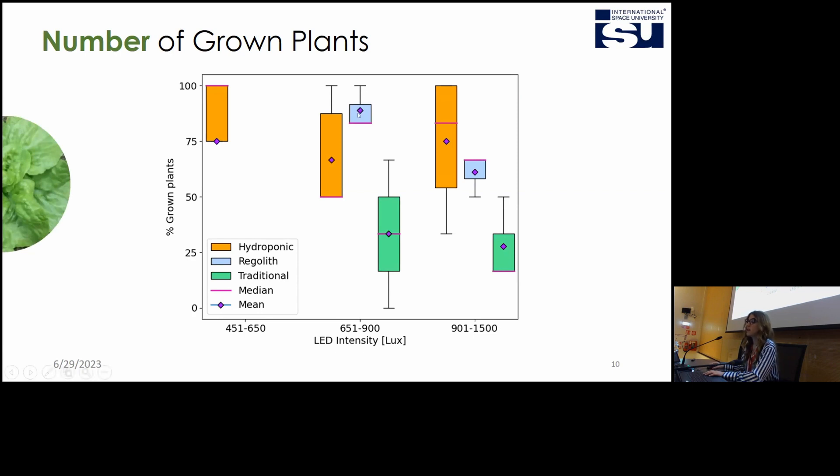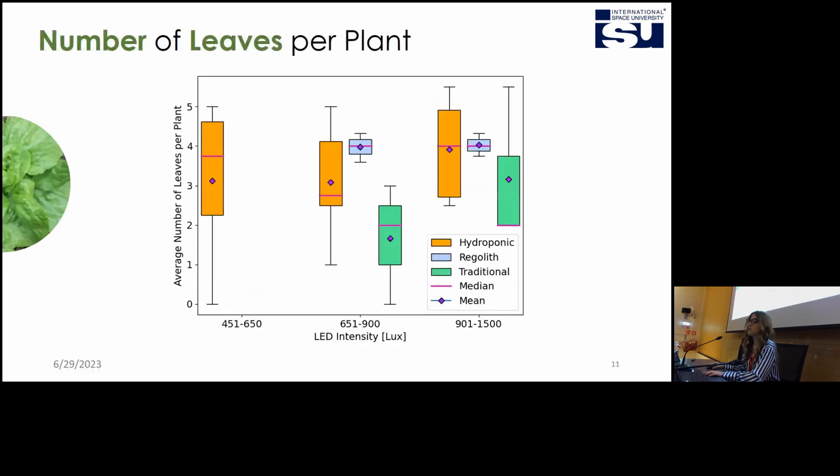The regolith ones have higher performance with respect to the hydroponic in the medium range and is the opposite in the high range. I also evaluated the average number of leaves per plant with respect to the LED intensity. In this case, the regolith plants seem to have better performance with respect to the hydroponic system.